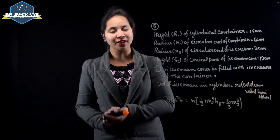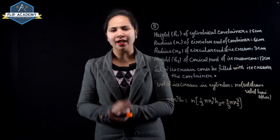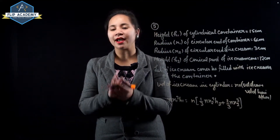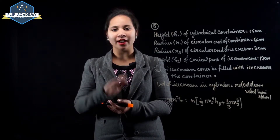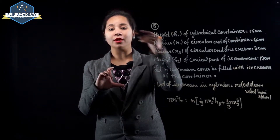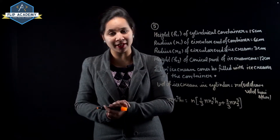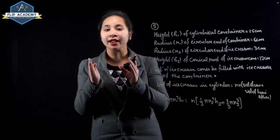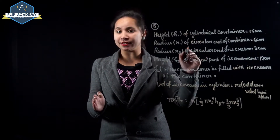In this question we have a cylindrical container. We have to fill ice cream cones — each in the shape of a cone with a hemispherical top. We will find out how many cones can be filled from this cylindrical container.